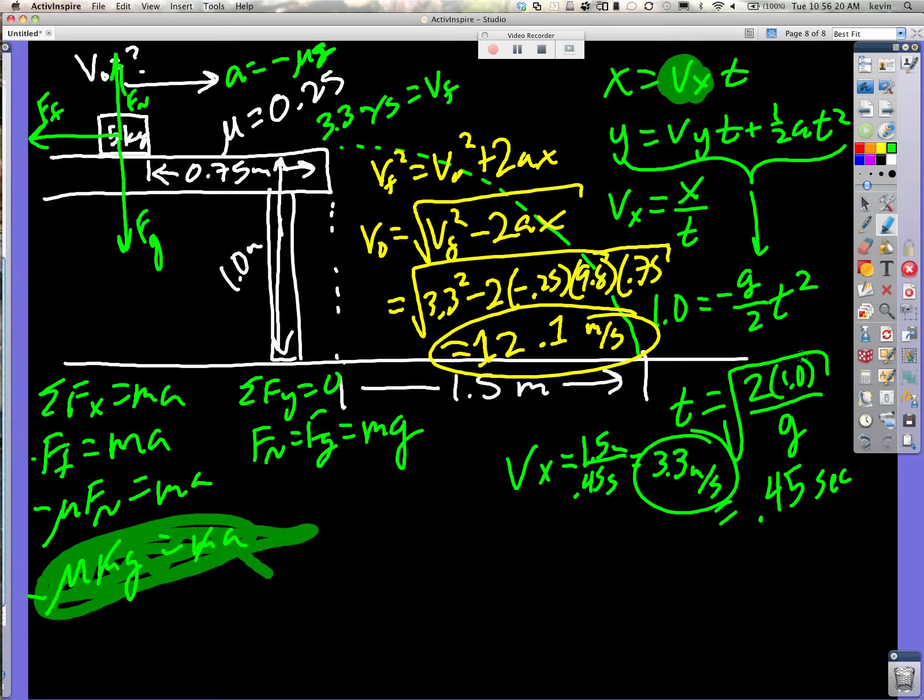I take the distance that it traveled in 0.45 seconds, which is 1.5 meters, and that tells me that it was going 3.3 meters per second when it left the table. And if I know that velocity, this, this, and this, I'm done.